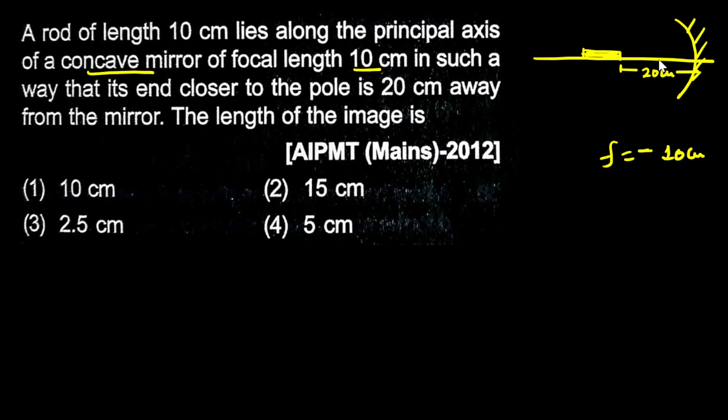The focal length is 10 cm. Since this is a 20 cm distance, this end is at the center of curvature, because the center of curvature is at 2F distance. So one end of the rod is at the center of curvature.